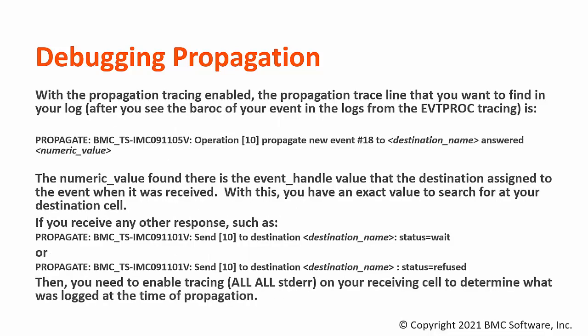With propagation tracing enabled, here I am showing the format of the propagation trace line that you would look for after you see your event was received. The number value after 'answered' is the event handle that the receiving cell assigned to the event — this gives you a specific value that can be searched for at your receiving cell's trace. If there was a propagation problem, you may instead see a different entry in your logs such as a status of 'wait' or 'refused.' If you see this, then you may need to enable tracing on your receiving cell to see if it has traced anything at the time of propagation.